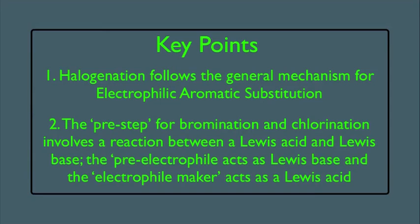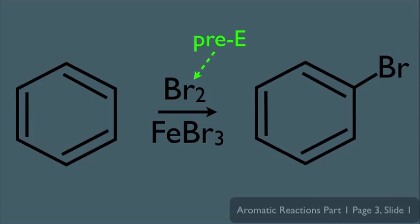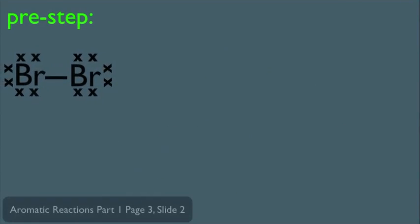Let's see how this works. Let's look at our overall reaction first. Notice Br2 is playing the role as the pre-electrophile, FeBr3 is playing the role as the electrophile maker, and Br is playing the role as the electrophile. Like we learned before, all of these reactions start out with a pre-step, which involves these two species, Br2 and FeBr3. The electrons on one of the brs donate to the Fe metal.